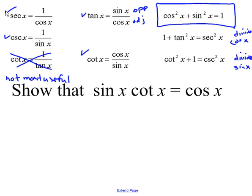Our main idea is to show that sine of x times cotangent of x is equivalent to cosine of x. We will be done when we have a statement that looks like cosine of x equals cosine of x. The 8 identities up here are true equations — you can add and subtract to one side or the other. What we are trying to prove is not an equation yet, so I can't, for example, add two to both sides. That is not allowed because we do not know if this is an equation.